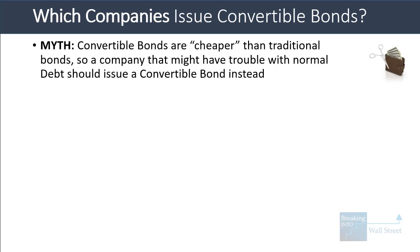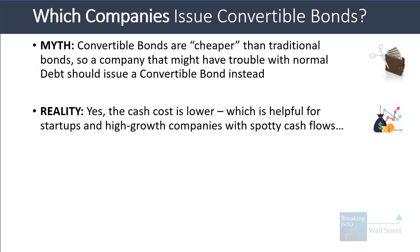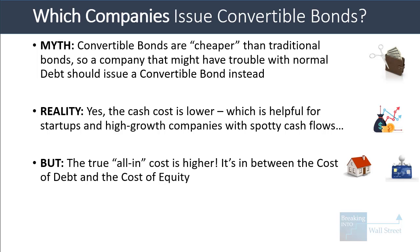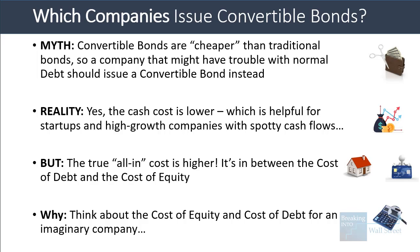One myth is that convertible bonds are cheaper than traditional bonds, so they're appropriate for a company that might have trouble servicing its debt. The truth is that the cash cost is lower, which can be helpful for startups and high growth companies with irregular cash flows. But the actual all-in cost of convertible bonds is higher — it is in between the cost of debt and the cost of equity in most cases. You can't just look at the coupon rate or the yield to determine the cost.